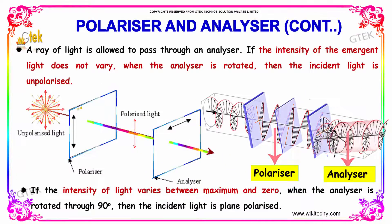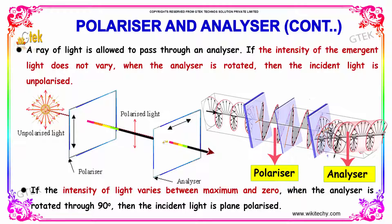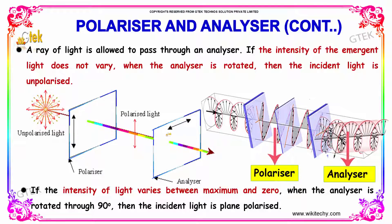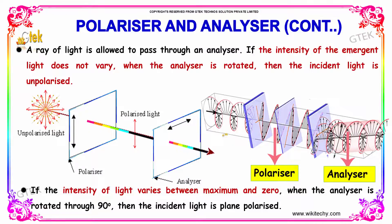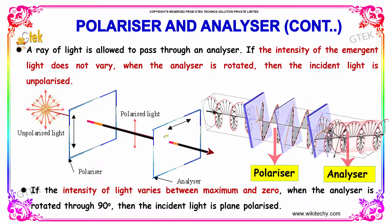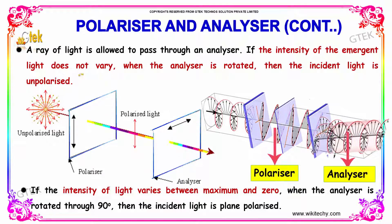A ray of light is allowed to pass through an analyzer. If the intensity of the emerging light does not vary when the analyzer is rotated, then the incident light is considered as unpolarized.